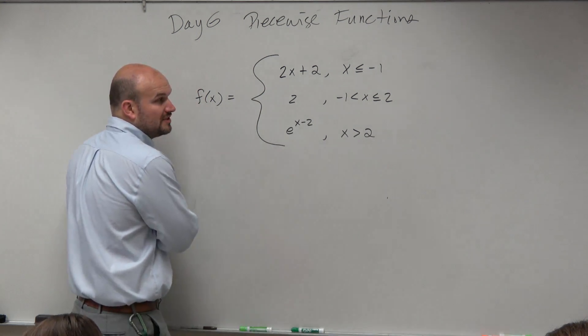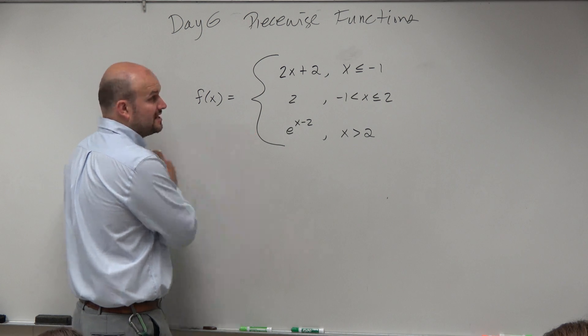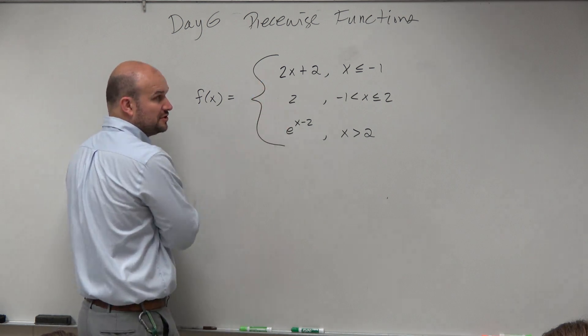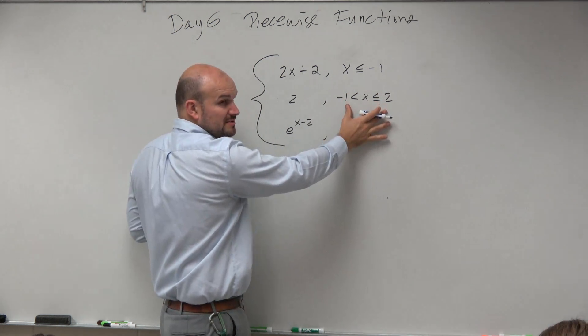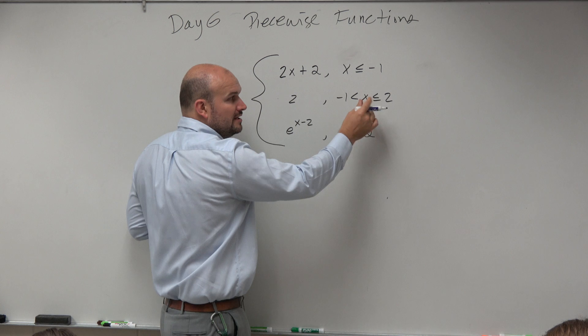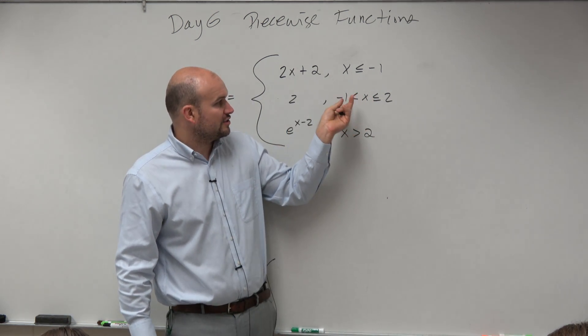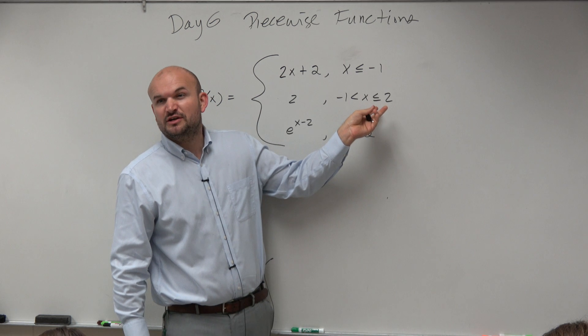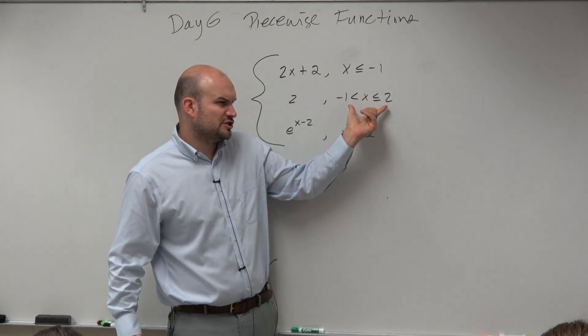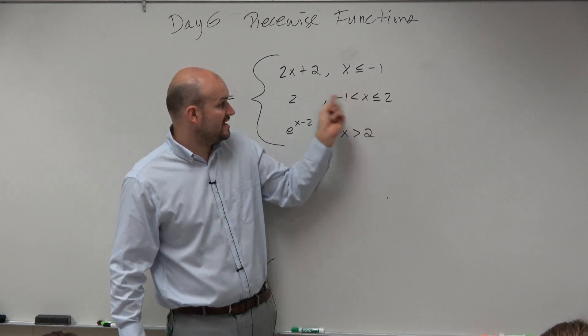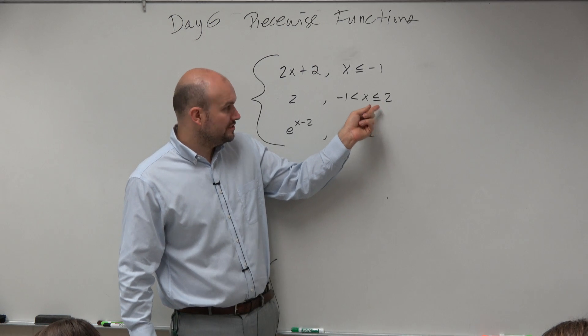Now notice here, we have a couple of things that are going on. We obviously have three different equations now. But these are all three that we've been exposed to. And we have some different inequalities. So this is a different inequality. This is, as we know, a compound inequality. And basically, it's saying that you only want to graph this function for values of x that are greater than negative 1 but less than or equal to 2. So this is something that we did in Algebra 1 and Algebra 2. So we just want to make sure we just truly understand what that is saying.